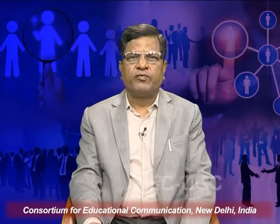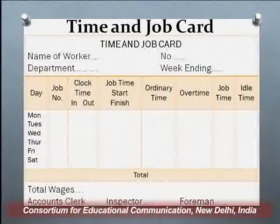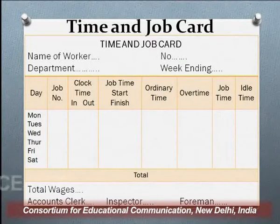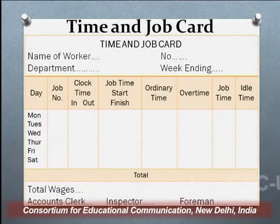There is also a combined performa of time and job card. As discussed, there are two aspects: time keeping — recording total time spent in the organization — and time booking — recording time spent on a particular process or work. The combined time and job card performa includes: name of the worker, department, number, week ending, and from Monday to Saturday: job number, clock time in and out, job time start and finish, ordinary time, and overtime.